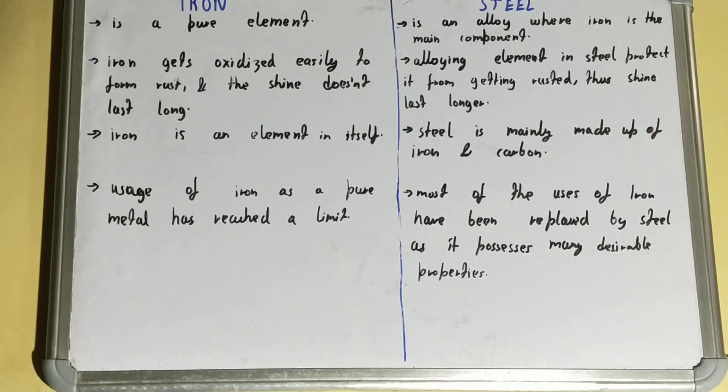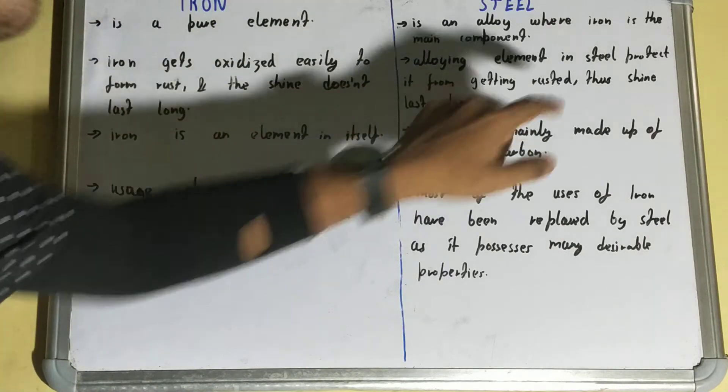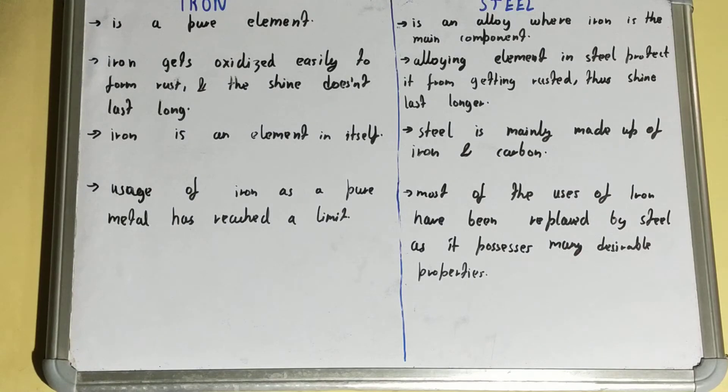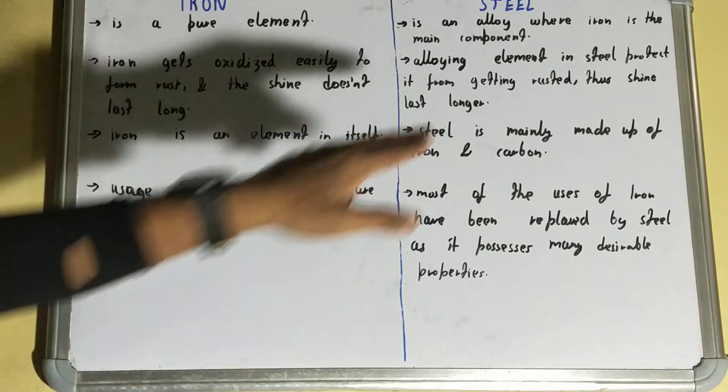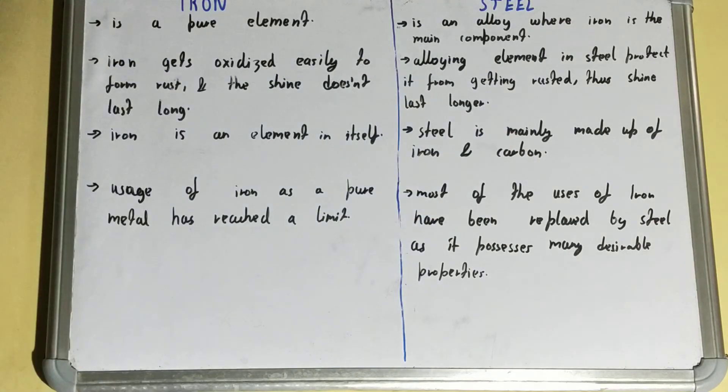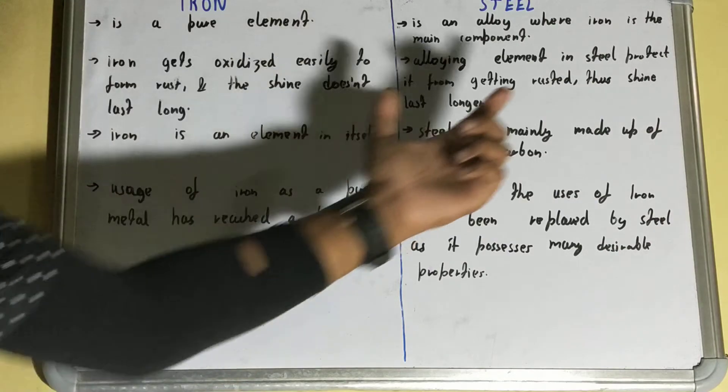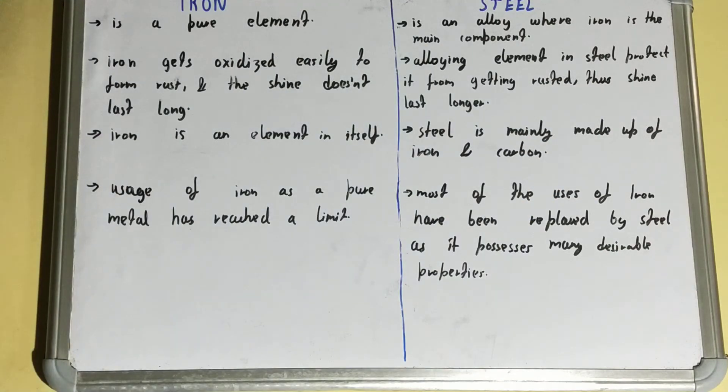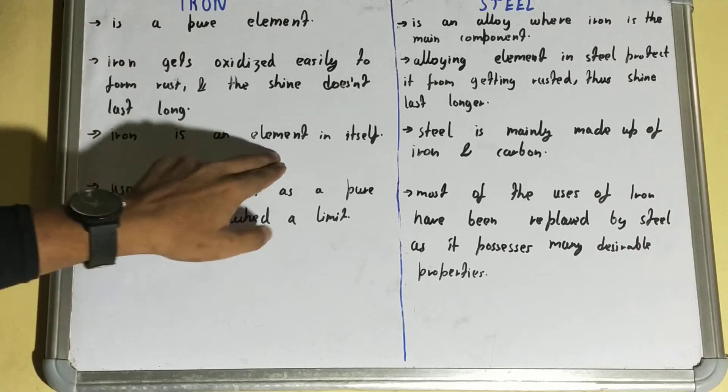...elements in steel protect it from getting rusted. Because steel is an alloy that contains other elements also, it doesn't get rusted easily, and because of this, the shine lasts longer.